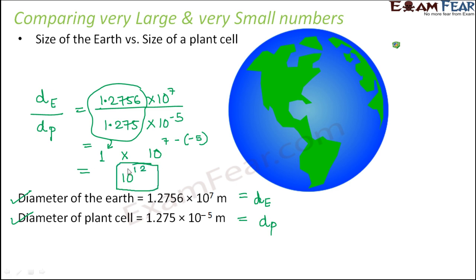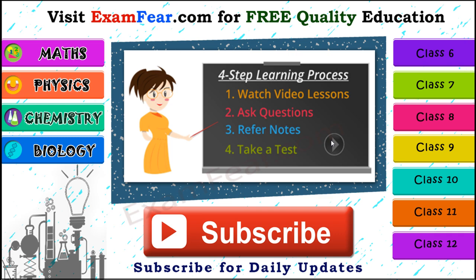So the size of a plant cell is very, very small compared to the size of the Earth. We can say the size of the Earth is 10¹² times the size of a plant cell.